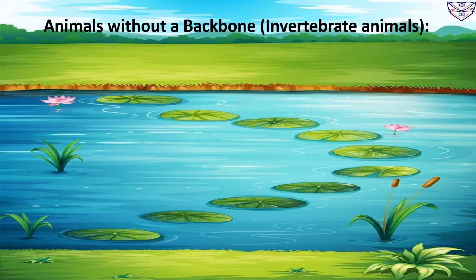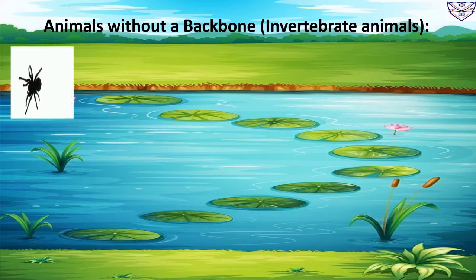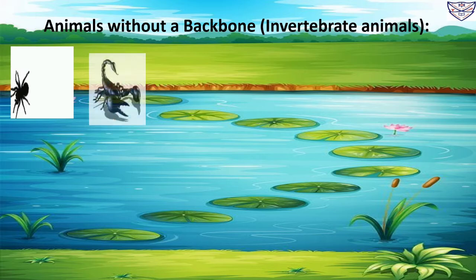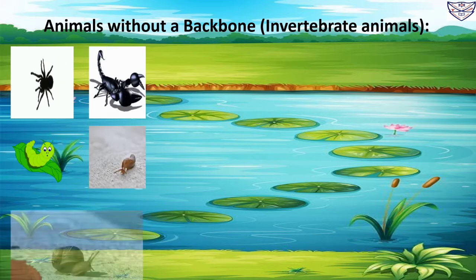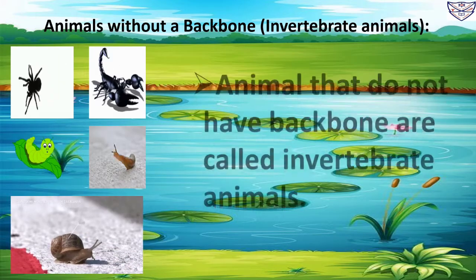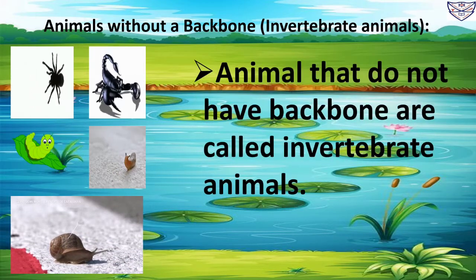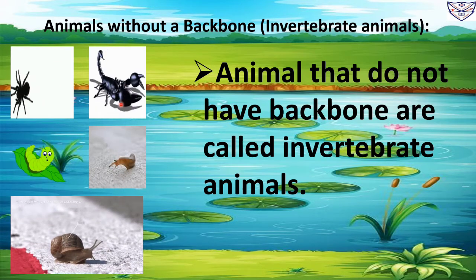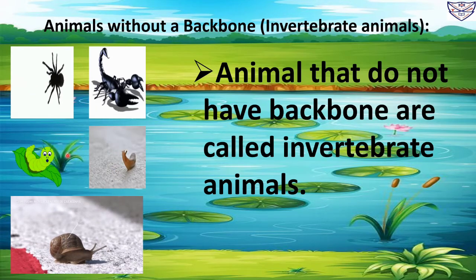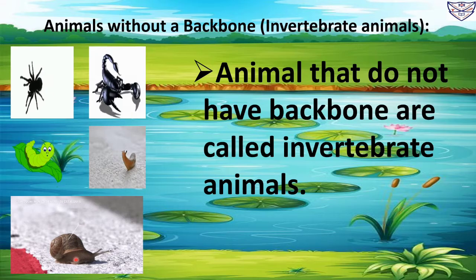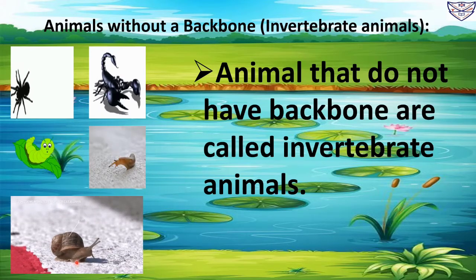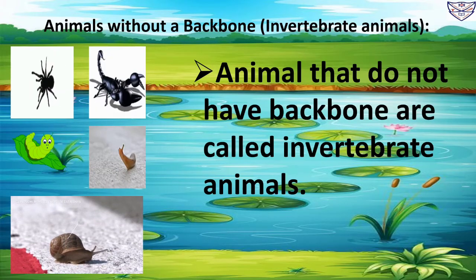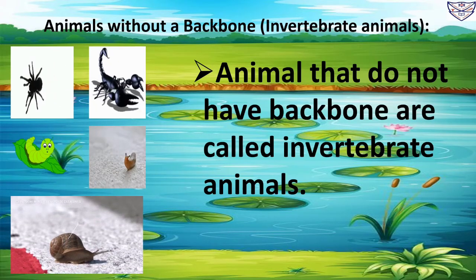Animals without a backbone are called invertebrate animals. For example, spider, scorpion, worms, slug and snail, etc. are examples of invertebrate animals.